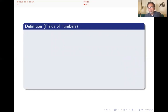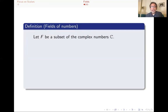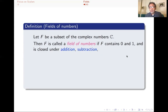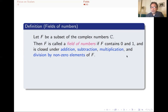A field is a slightly more general concept, but this will do for us for now. We'll start with the complex numbers — F is a subset of the complex numbers. The reals would be an example of that. The complex numbers themselves would be an example, but there would be plenty of other possibilities also. We call F a field of numbers if it contains zero and one, and if it is closed under addition — meaning that if you take two elements and add them, the result stays in F. It should also be closed under subtraction and multiplication, and division by non-zero elements of F.